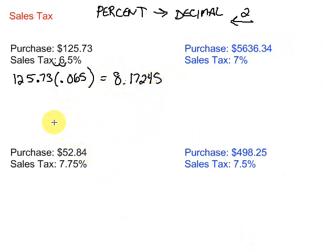125.73 times .065 gives us 8.17245. Now, when we're working with money, we always just use two decimal places. So we're going to round this off to the second decimal place, the hundredths position. We look at the next number to the right. That's a two, so that's less than five. So we're just going to drop this part of the number off and we get $8.17.